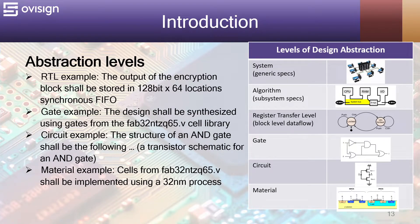RTL example: the output of the encryption block shall be stored in a 128-bit by 64 locations synchronous FIFO. Gate example: the design shall be synthesized using gates from the fab3265.v cell library. Circuit example: the structure of an AND gate shall be the following, and next we have a transistor schematic for an AND gate.